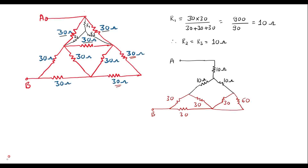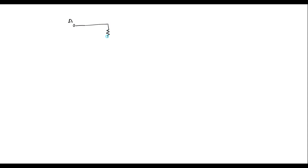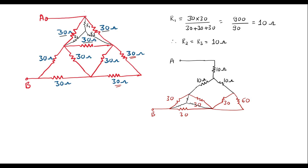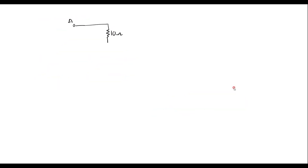So the equivalent star connection again will be the same — the connection will be like this with R1, R2, R3. These values are again 10 only. Now let me reduce this circuit further. So here we have node A. This is 10 ohm, and I will write these two 10-ohm values as they are. So this is 10, this is 10, this is 10, this is 10, and this is 10.